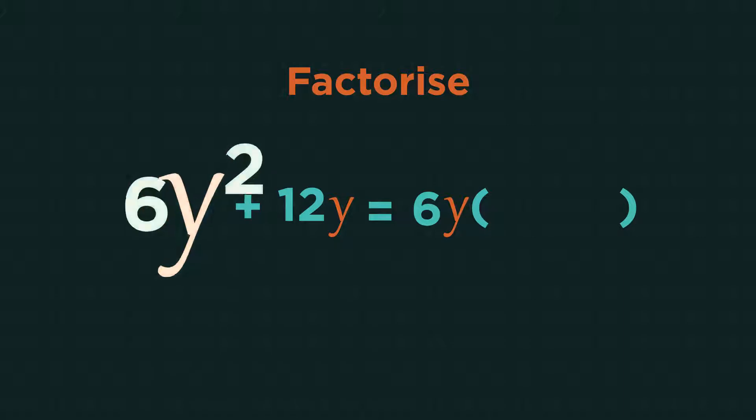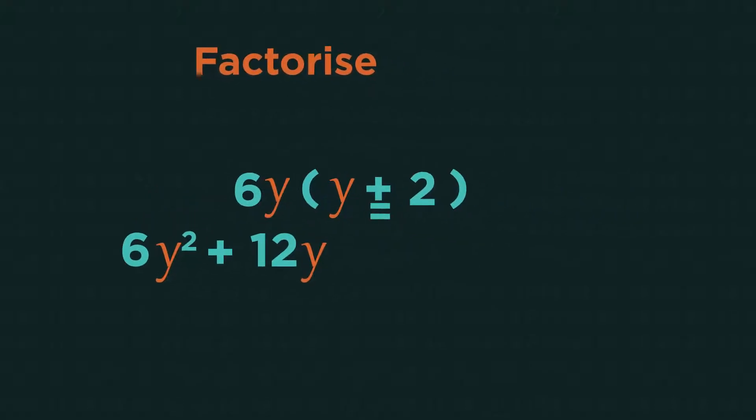What do we need to multiply 6y by to get 6y squared? Just y, to put that inside the bracket. And what do we need to multiply 6y by to get 12y? 2, so plus 2 inside the bracket.